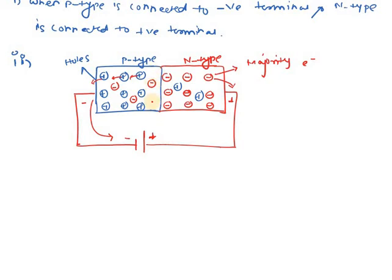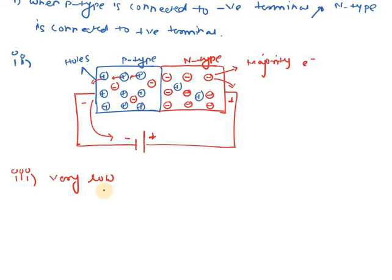Due to this movement, the width of the depletion layer goes on increasing. Why? Because more holes are moving towards the negative terminal and more electrons are moving towards the positive terminal. As the width of this region increases, there is no possibility of recombination of holes and electrons, and due to this the current that flows in reverse bias is very low. We can say that in reverse biased p-n junction diode, no current flows through the circuit.